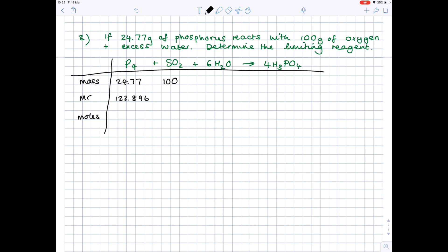Our MR of oxygen, remember we ignore that big 5, we're just looking for the O2, so we're doing 15.999 times 2 to get 31.998. Our number of moles is mass divided by MR, so let's work that out. So 24.77 divided by 123.896 equals 0.199.